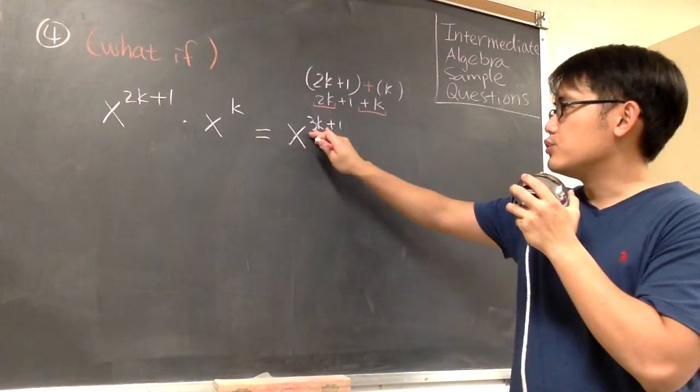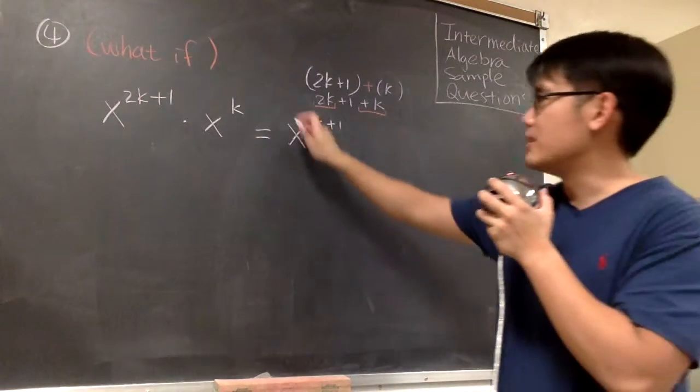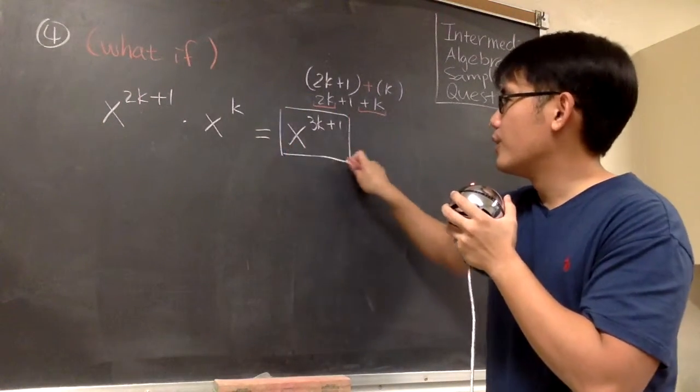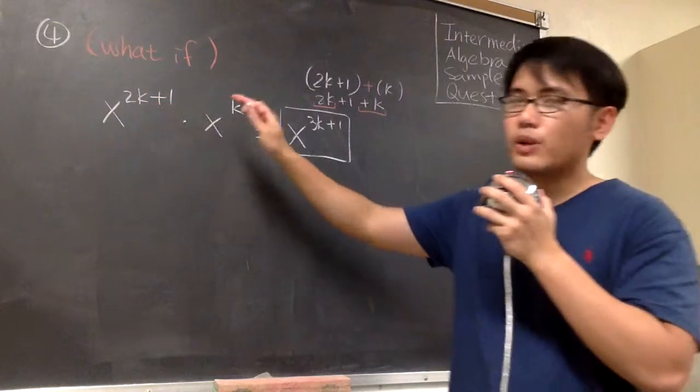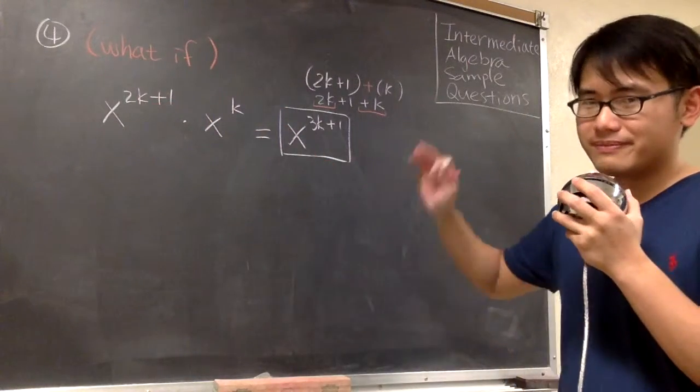So here x to the 3k plus 1 power, this is the result. When we have x to the 2k plus 1 times x to the k power, this is it.